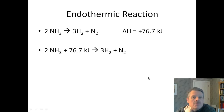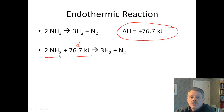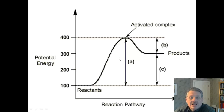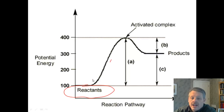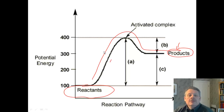An endothermic reaction is exactly the reverse — it is absorbing energy. Your delta H is going to be a positive number. You are putting energy in on the left-hand side of the equation. For example, we take some ammonia, put in some energy, and get out hydrogen and nitrogen gas. The graph looks exactly the opposite: reactants have less energy and they produce products that have more energy. Think of that cold pack — it's absorbing energy and storing it in chemical bonds.